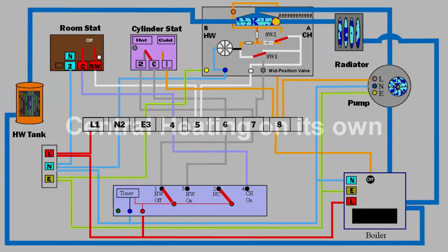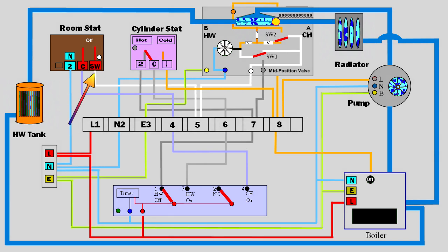Central Heating: We start with setting the room thermostat calling for heat. Now we turn on the central heating switch on the controller. The mid valve motor starts.